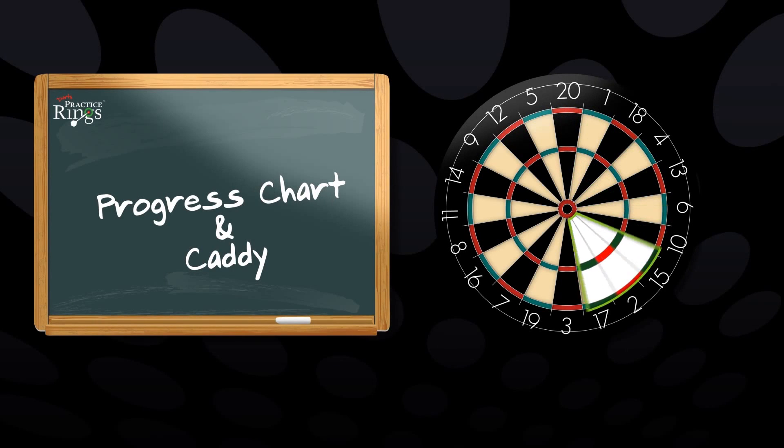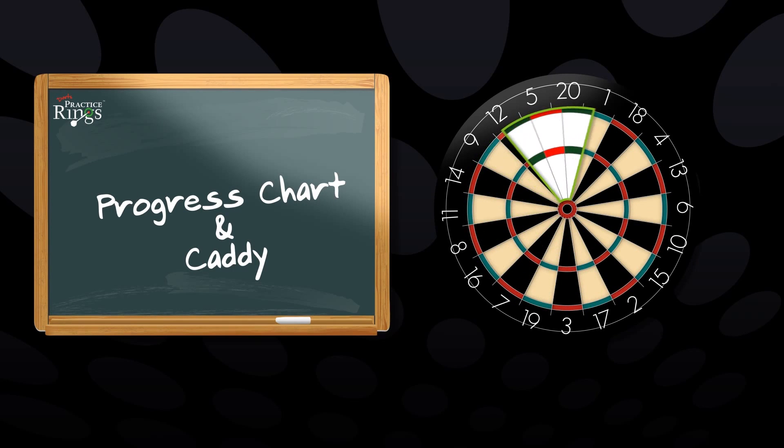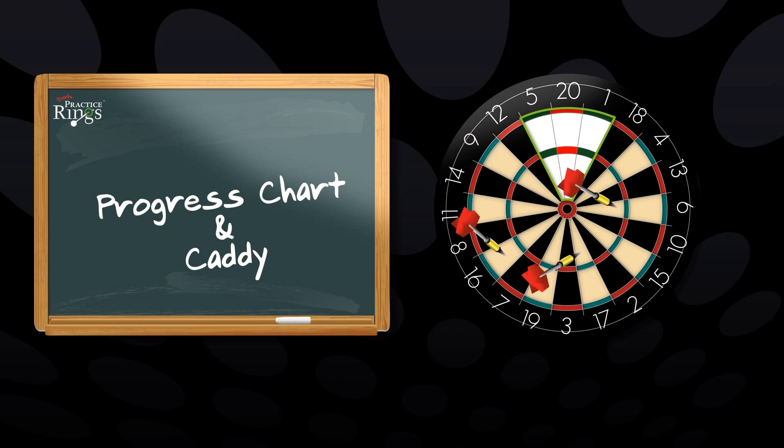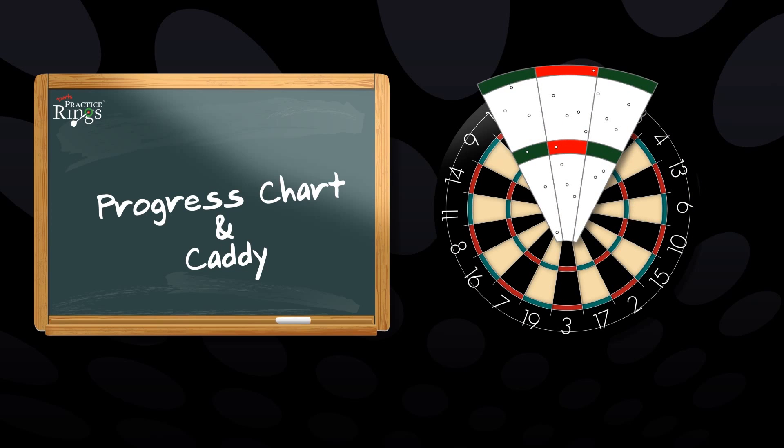Whenever they want to measure their progress, a new progress chart is placed into the chart caddy positioned over the same area of the dartboard, and the same number of darts are thrown. A player's performance can be measured by comparing and referencing these results back to previous charts.